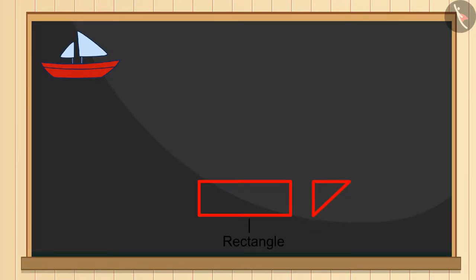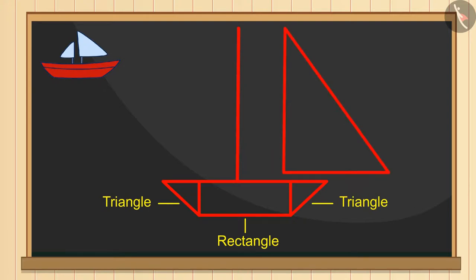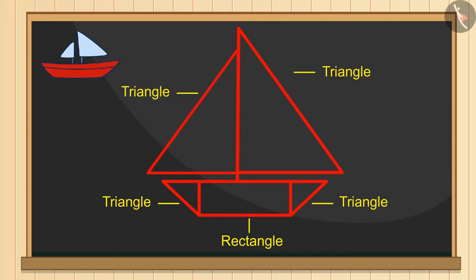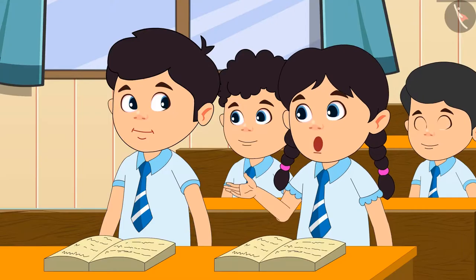If we make one triangle each at both the edges of the rectangle then the lower part of the boat would be complete. Now we will draw a line to make its upper part and will make a big triangle on its left side and a small triangle on its right side. How do you find my boat? Oh wow, the boat is made by just using the shape of rectangle and triangle.